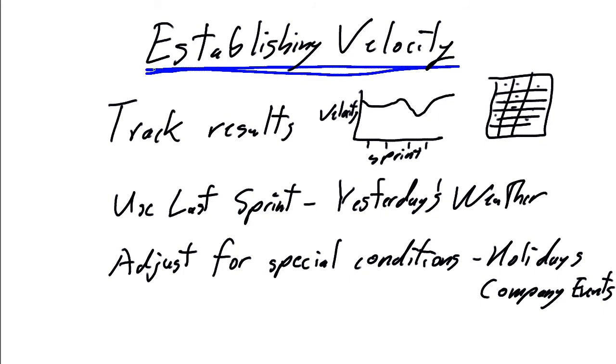And how do we make it better? We simply establish the velocity of the team over time. We track the results. Maybe we put a graph together that says for sprint one, sprint two, sprint three, sprint four, I was able to do 16 story points. So we're going to begin to get an appreciation of the team's capacity and our ability to assign the story points to the stories based on our degree of complexity.